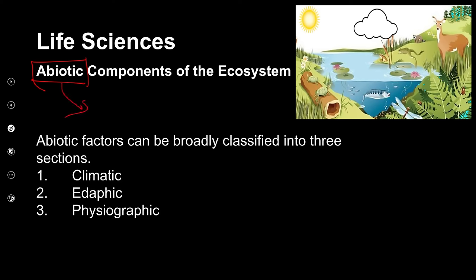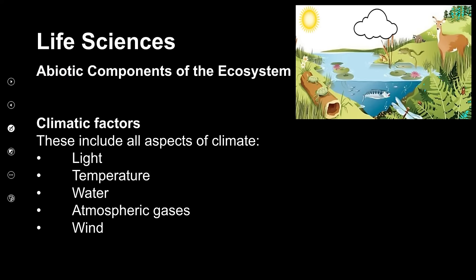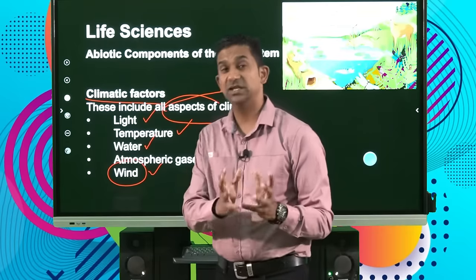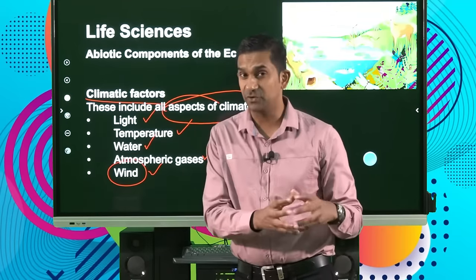Let's try and understand what the abiotic components of an ecosystem are. The abiotic components are the non-living components, and these can be broadly classified into the climatic conditions, the edaphic conditions, and the physiographic conditions. When we talk of our climatic factors, we refer to aspects of the climate — the light and availability of light, the temperature of the environment, the type and amount of water, the composition of atmospheric gases, as well as the velocity of wind in those areas. All of these factors collectively can influence the diversity of life forms in an ecosystem.